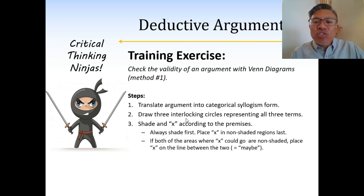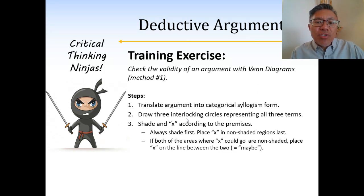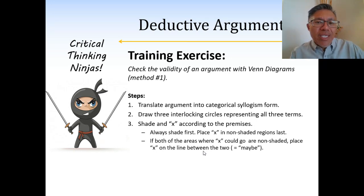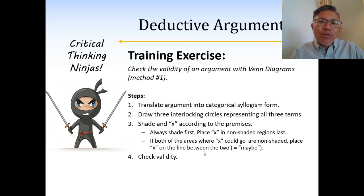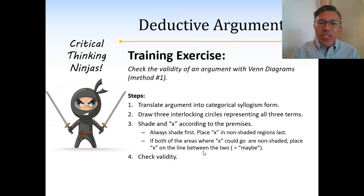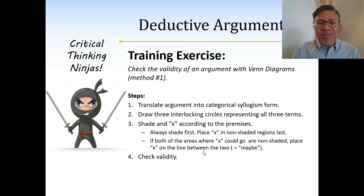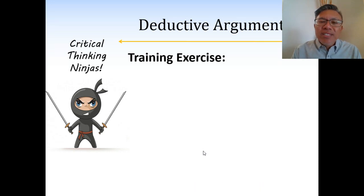If both areas where an X could go are non-shaded, it's not obvious which region to choose. In that case, we put the X on the line between the two regions — meaning it's a 'maybe' for either location. Once we've shaded and placed X's based on the premises, we look at the conclusion to see if it necessarily has to be true given the diagram we drew.